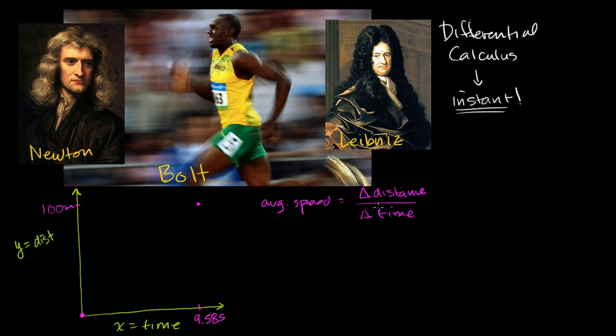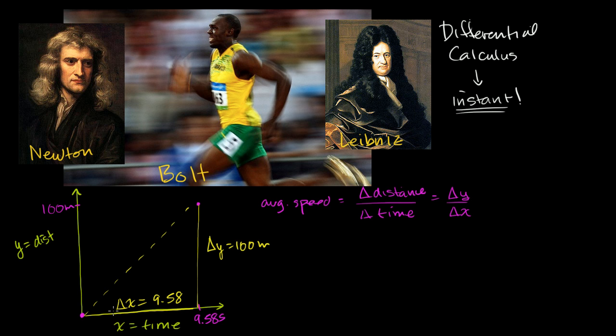Using the variables here, y is distance, so this is the same thing as change in y over change in x, from this point to that point. This might look somewhat familiar from basic algebra — this is the slope between these two points. The change in distance is 100 meters, and our change in time is 9.58 seconds. That's the rise over the run, which you might have heard in your algebra class.